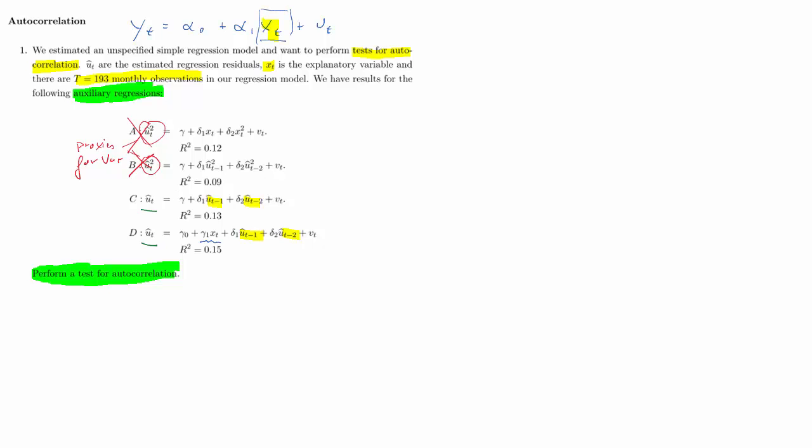Whenever you run an auxiliary regression with ut hat, the estimated residuals, you have to include the explanatory variable as well, although you know that it will be uncorrelated to the ut hat.